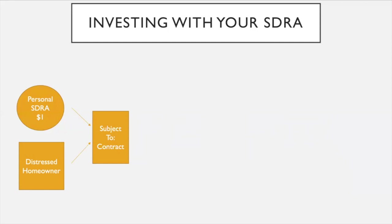Simply put, a subject-to financing contract means you're going to take over their current mortgage. Maybe you need to recover some past-due payments. They deed the house to you and you start making their mortgage payment to the bank. In the process, you help them in whatever way was negotiated in the contract — maybe they need help finding a new apartment or a down payment for a new place. You negotiate those terms, take over the payments, and take ownership of the house using the existing mortgage.